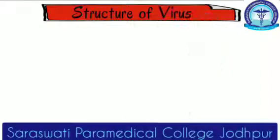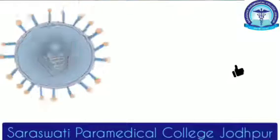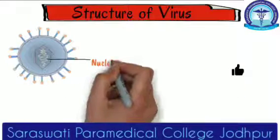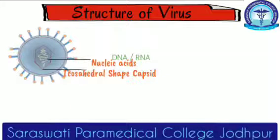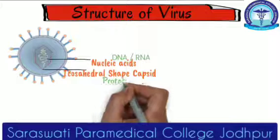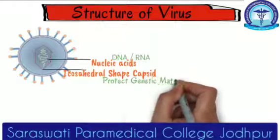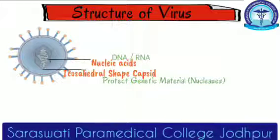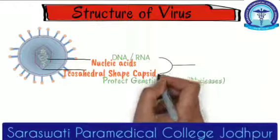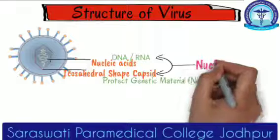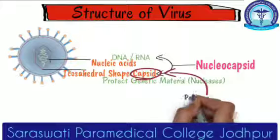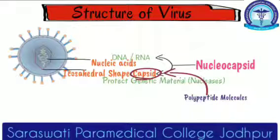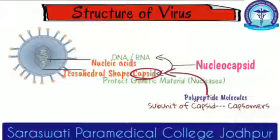Now, look at this picture — the structure of virus. The innermost part is a single or double stranded DNA or RNA. In the middle layer, we have a covering of this nuclear material, which is known as capsid. Basically, it protects the genetic material from destruction by enzymes such as nucleases. The combination of nucleic acid plus capsid in combined form is called nucleocapsid. This capsid is chemically composed of polypeptide molecules, and the subunit of capsid is capsomers. This is also very important.